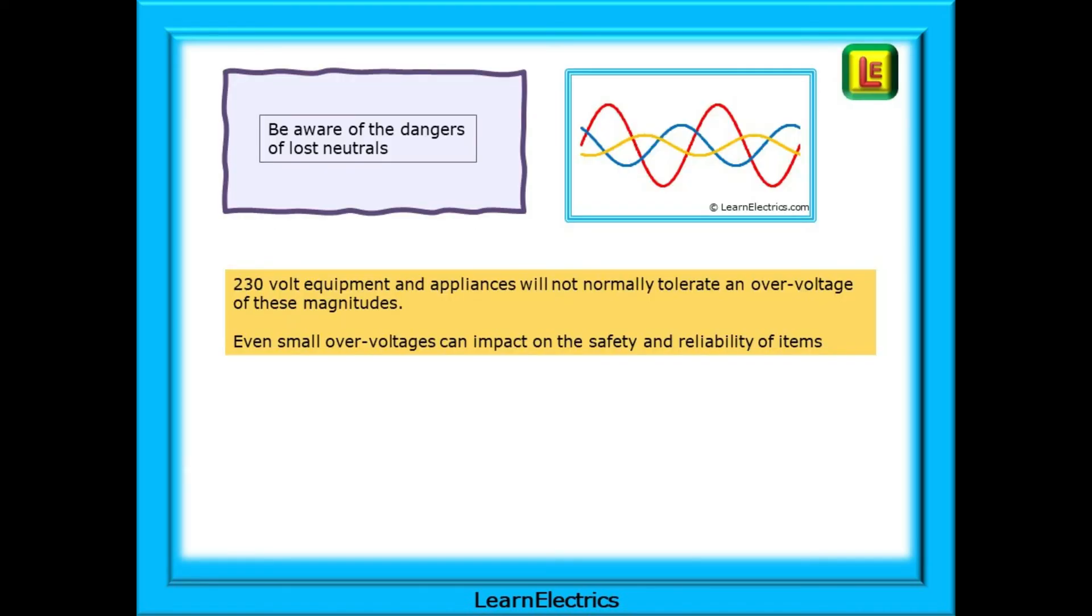Hopefully, this simple introduction has given you some understanding of how it happens. Always be aware of the dangers of lost neutrals in three-phase installations. 230 volt equipment and appliances will not normally tolerate an overvoltage of these magnitudes, and even small overvoltages can impact on the safety and reliability of items.